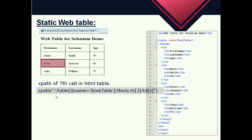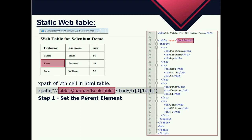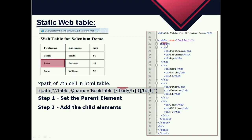We can see the syntax of XPath: double slash table, at the rate name equal 'book-table', then one slash tbody slash tr[3] th. In XPath, the first step is to set the parent element. XPath locators in WebDriver always start with a double forward slash followed by the parent element. Here the parent element is table whose name is 'book-table'. The second step is to add the child element — the element immediately under the table tag is tbody, so tbody is the child of table. The tbody tag is used to group the body contents in an HTML table.